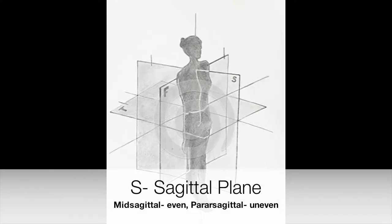Sagittal plane. As you can see by the S on the picture, a sagittal plane goes through the body vertically, dividing the body into left and right parts. A mid-sagittal plane divides the body into even left and right parts, but a parasagittal plane divides the body into unequal left and right parts.